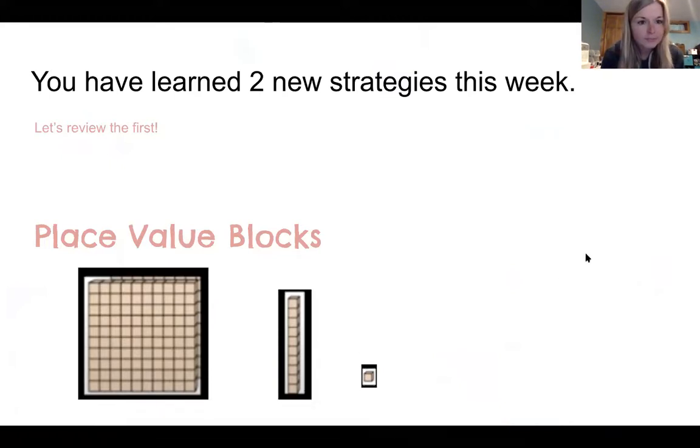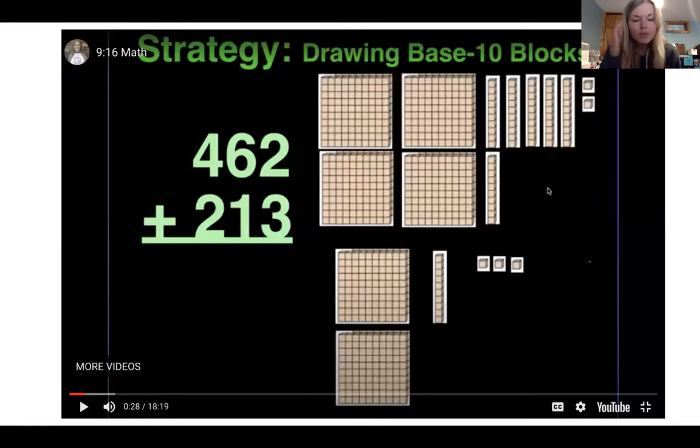So think back to the video and you will recognize an equation and a model like this. We have 462 plus 213. We would take the first number and then draw a model for it. We would draw four one hundreds because this number is in the hundreds place. One, two, three, four one hundreds.